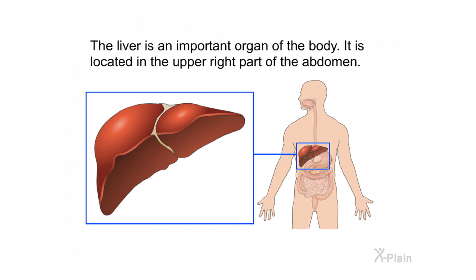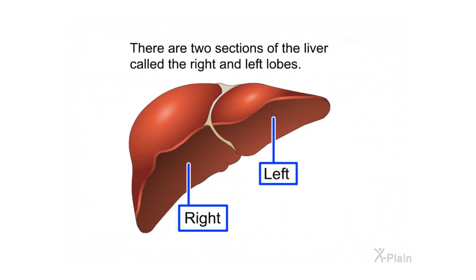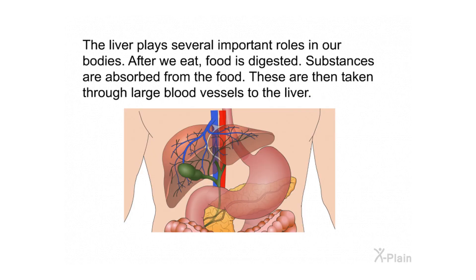The liver is an important organ located in the upper right part of the abdomen. There are two sections of the liver called the right and left lobes. The liver plays several important roles in the body. After we eat, food is digested and substances are absorbed, then taken through large blood vessels to the liver.